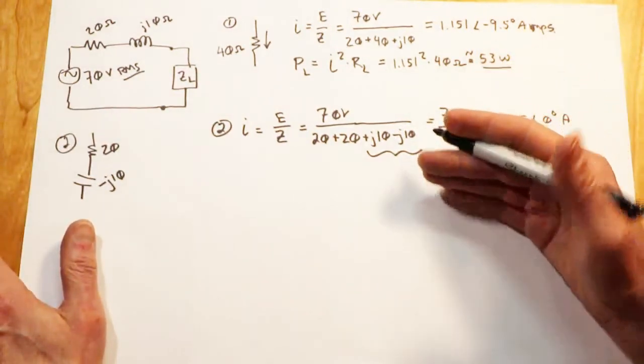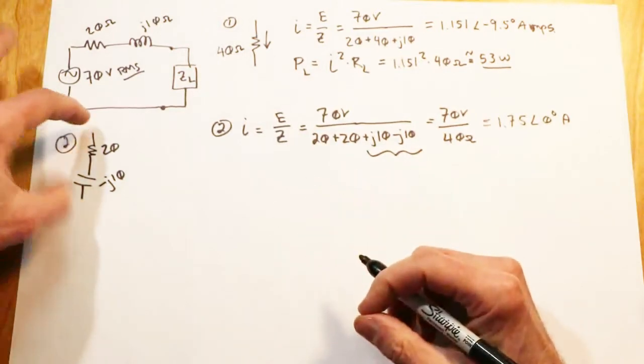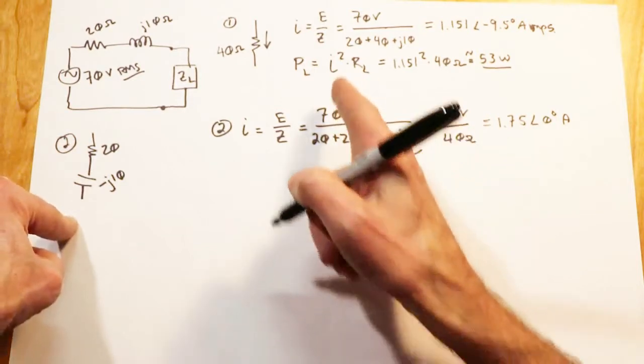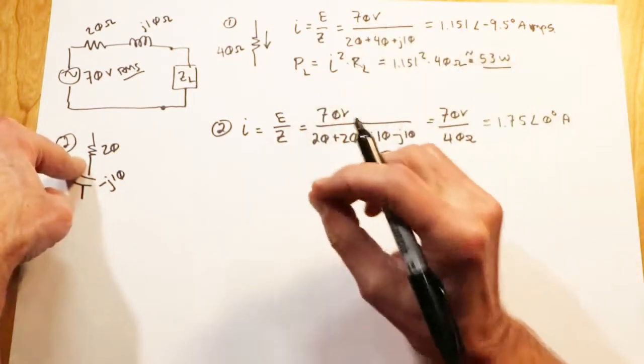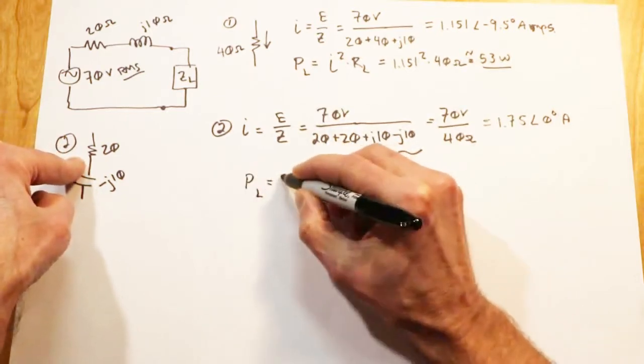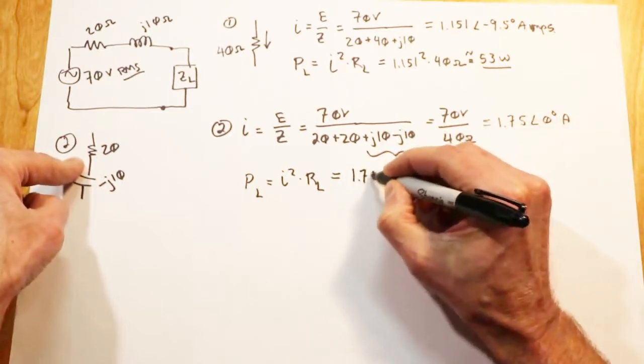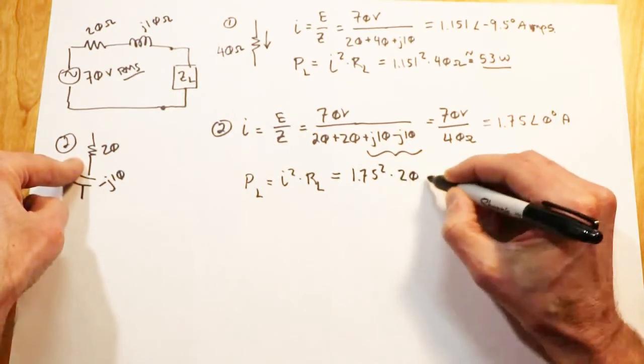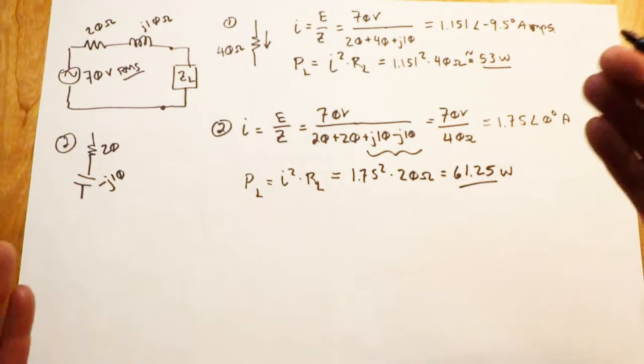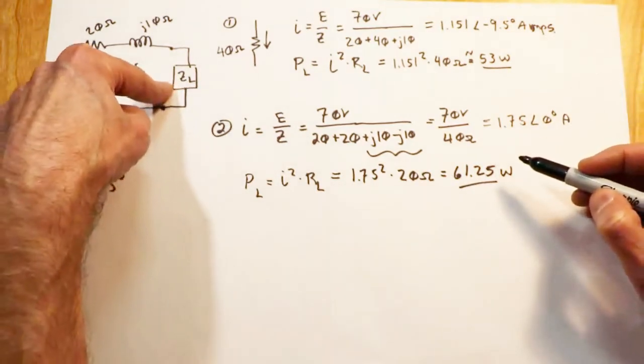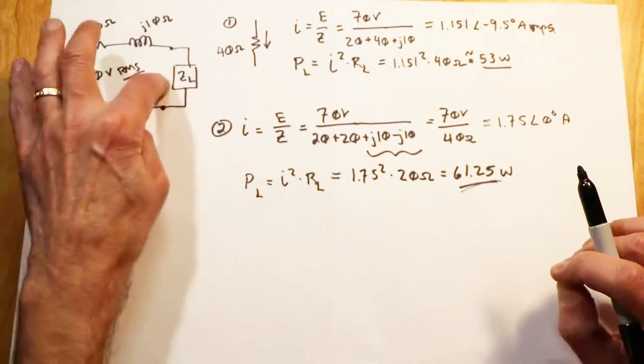Remember, only resistors dissipate power, true power. So I'm now going to take this 1.75 amps just like I did before. I'm going to pass that through the resistive part. I don't want to pass that through the resistor plus the inductor. In other words, I don't want to say I squared times ZL. I don't want to say I squared times 20 minus J10. I only want to look at the resistive part. Only the resistors produce true power. So the power in the load here is going to be I squared times RL again, not ZL, RL. And that's going to be 1.75 amps squared times that 20 ohms. And that is going to get us 61 and a quarter watts. What this theorem is telling us essentially is there's nothing else you can put in here that's going to give you anything bigger than 61 and a quarter. That's the max. That's the maximum power transfer. I'm going to get 61 and a quarter watts in that load.